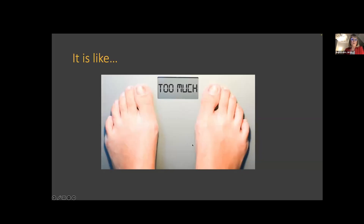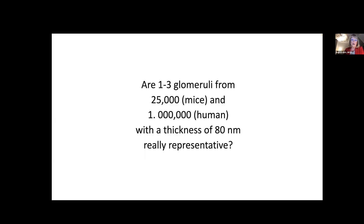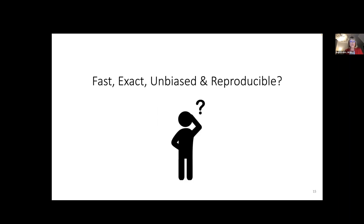To compare it with a normal situation, it is like if you wanted to know your weight but only saw 'too much' instead of a value. In my research group, I thought: are really one to three glomeruli — out of 25,000 in mice and 1 million in humans — at a thickness of 80 nanometers truly representative? Is there any possibility to have a fast, exact, unbiased, and reproducible value?